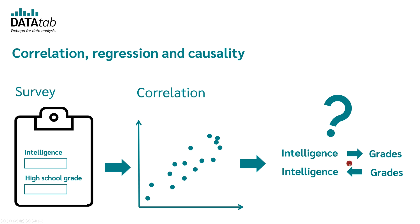Of course, we could now simply set up a regression model and define intelligence as an independent variable and high school grade as our dependent variable. Then we could predict the high school grades by using intelligence. But this is not a proof of causality.